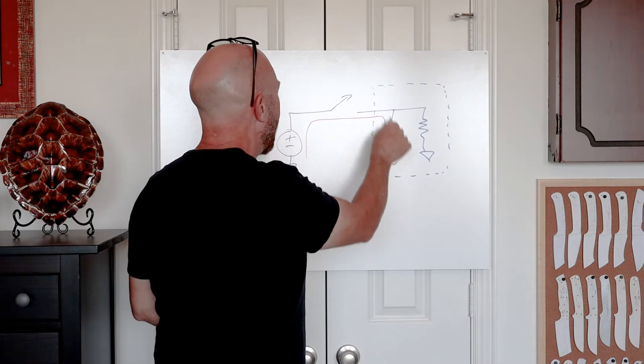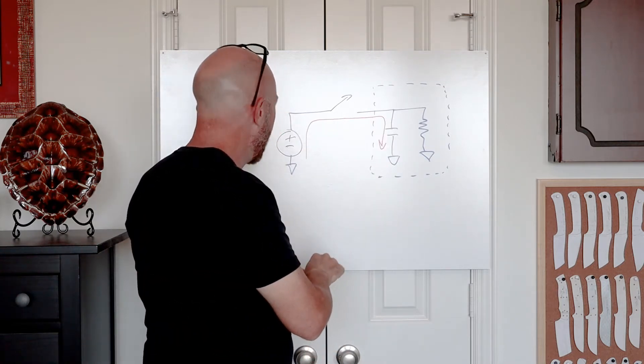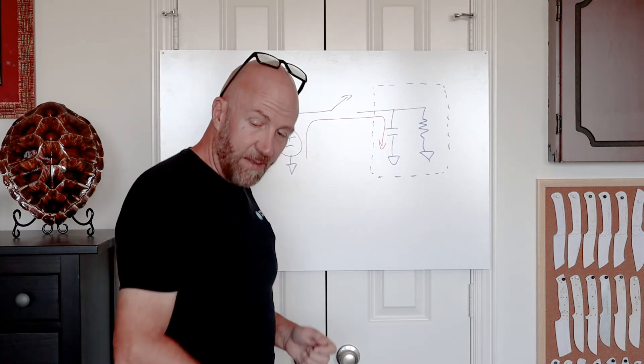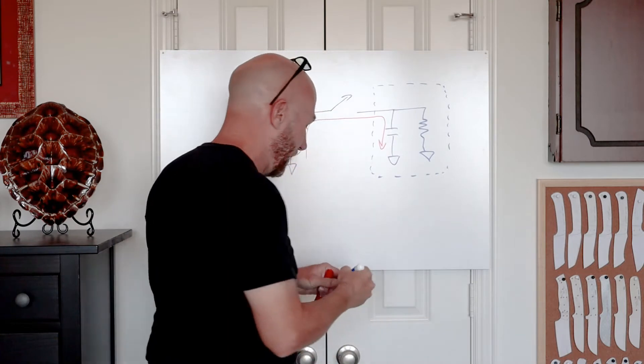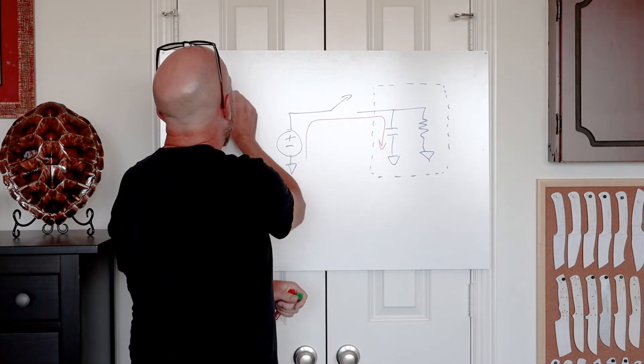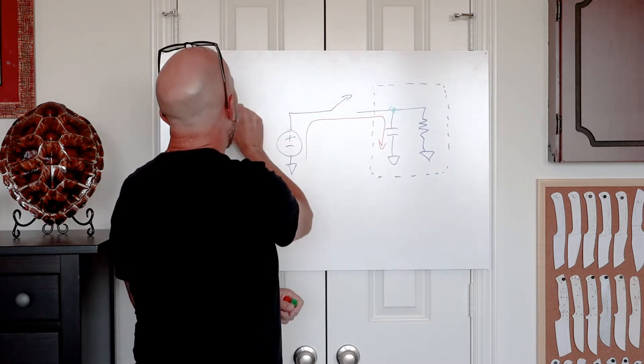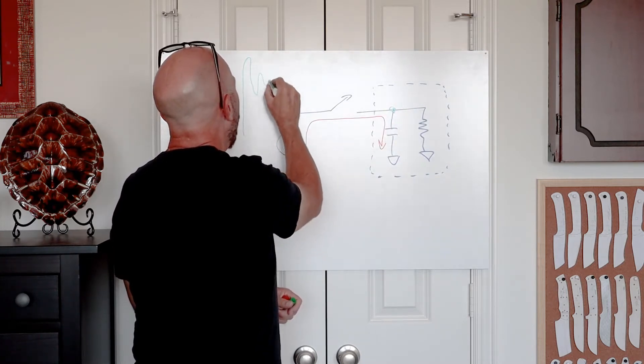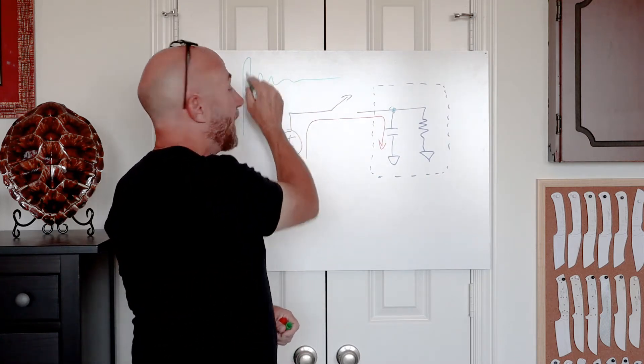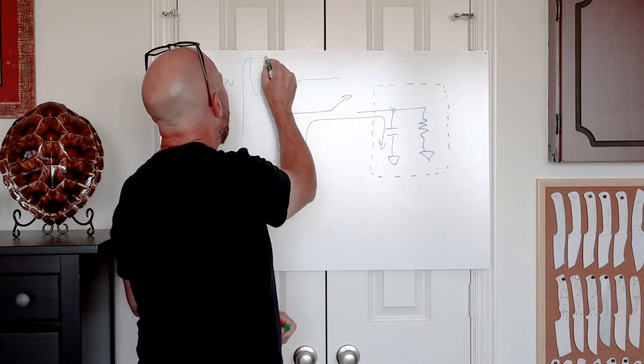When we close this switch, a high current flows through the switch into the input capacitance to the load. That high current draws a high transient load on the supply.